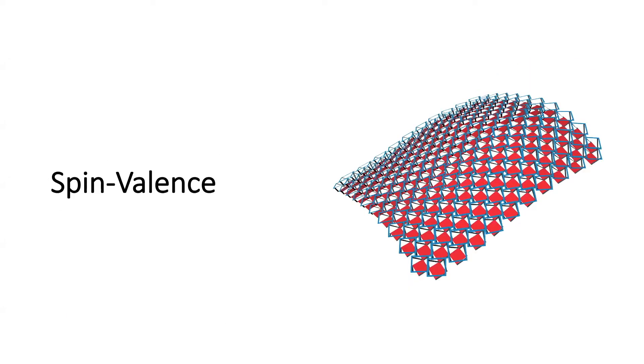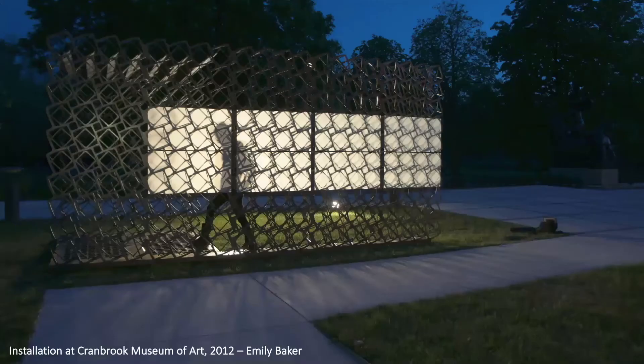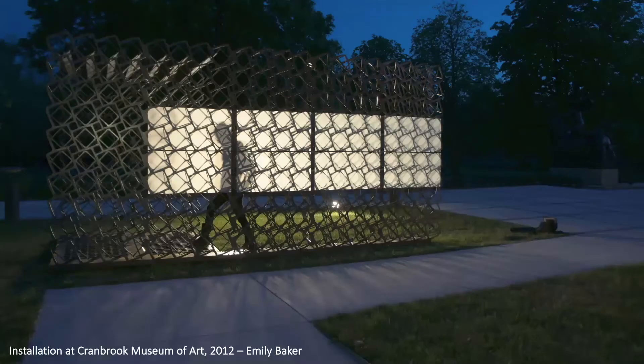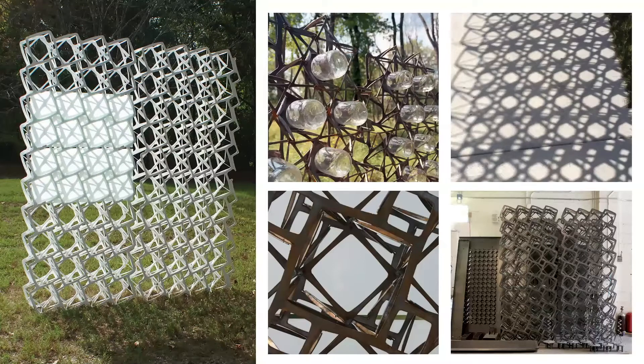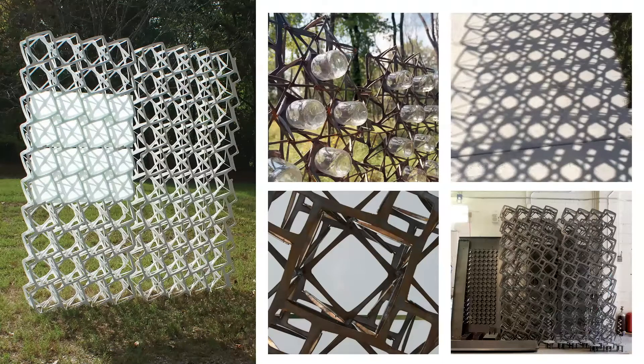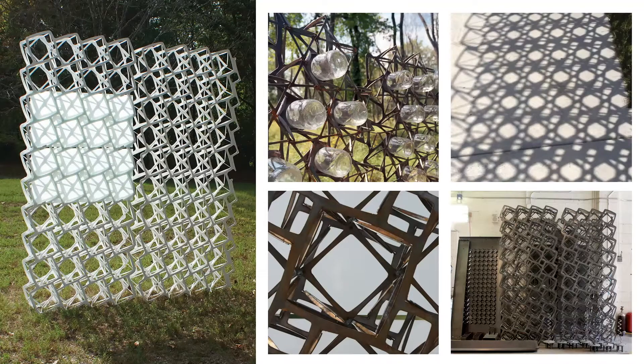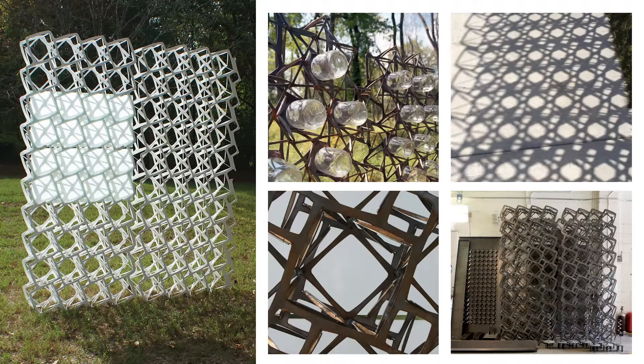First I want to describe what is spin valence. Here is an installation that was done at Cranbrook Art Museum quite a while ago. This was work that I produced inventing the system, which is a kirigami based space frame system, cutting and folding sheet material, in this case steel, into a deployable space frame that is essentially made of a single part folded and reconnected to itself rather than a series of discrete parts.